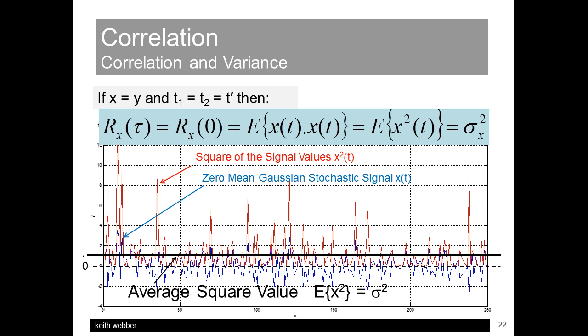This slide emphasizes the result that the autocorrelation function for the special case of zero delay Tor is the average value of the signal multiplied by itself, that is, the signal variance, our measure of the signal strength.